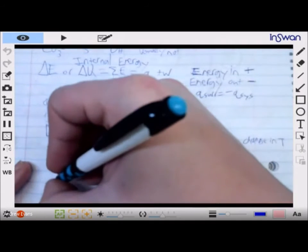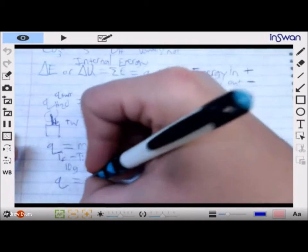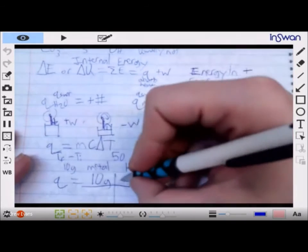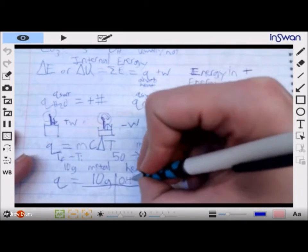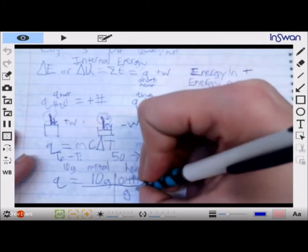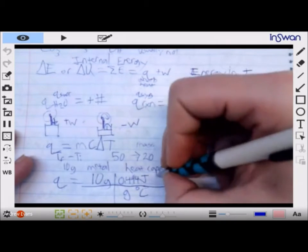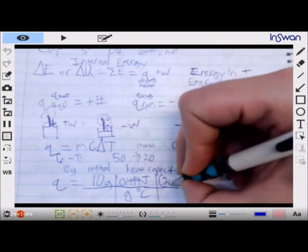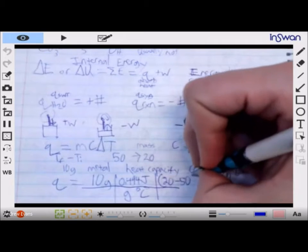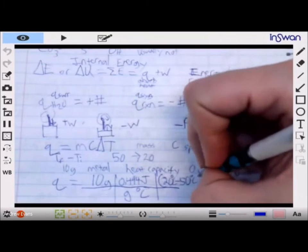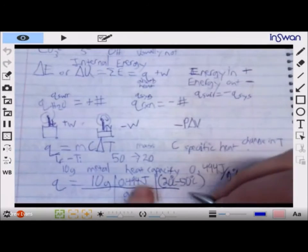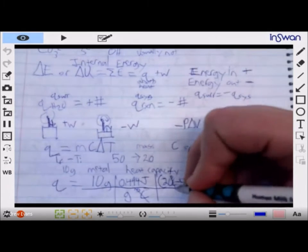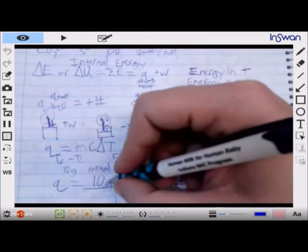Because we do this: I'm setting this up. The heat q equals 10 grams times heat capacity 0.494 joules per gram degree C times delta t, which is our 20 minus 50 degrees C. So that's going to be negative 30 degrees C.